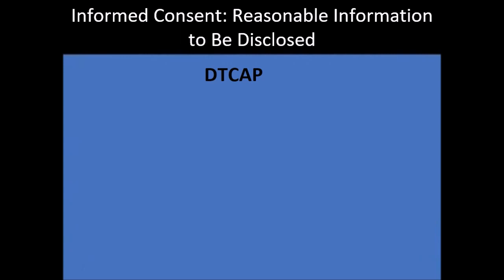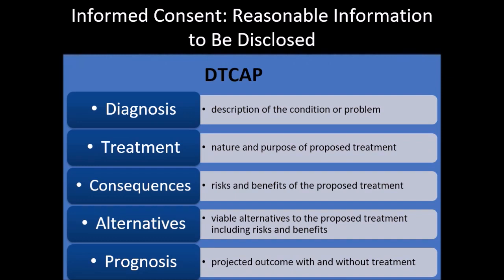There are specific things that should be included in informed consent. To better remember them, use the mnemonic D-T-C-A-P — think of delirium tremens community-acquired pneumonia. D stands for diagnosis: a description of the condition or problem. T stands for treatment: explain the nature and purpose of the proposed treatment. C: explain the risks as well as the benefits of the proposed treatment. A stands for alternatives: inform the patient of viable alternatives, including their risks and benefits. P stands for prognosis: what is the projected outcome with or without treatment.